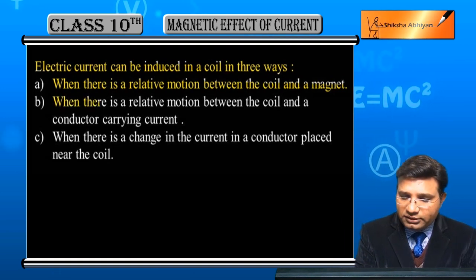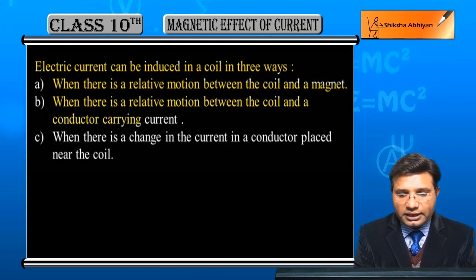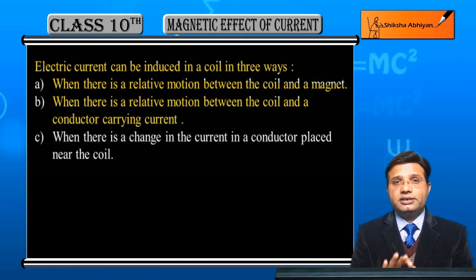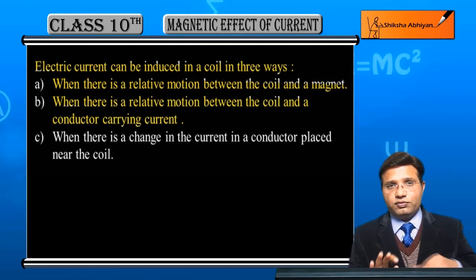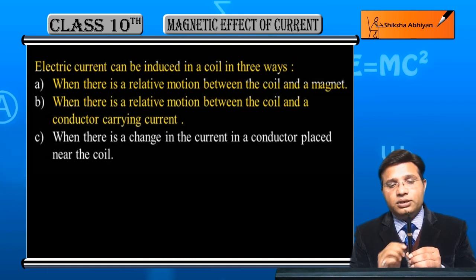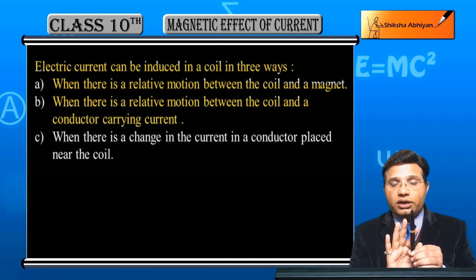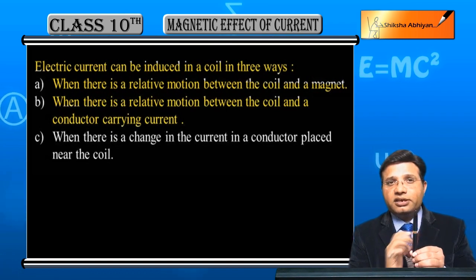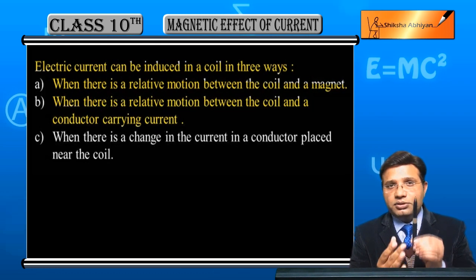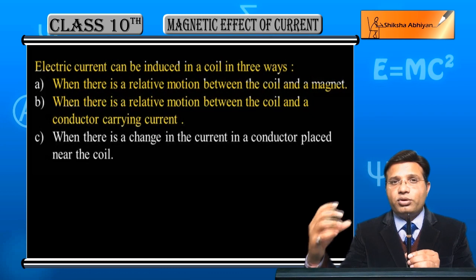Second is when there is a relative motion between the coil and a conductor carrying current. Magnet की जगह पे एक conductor लेंगे जिससे हम current पास कर रहे हैं। Current पास करने से उसके around magnetic field generate होगी — यह magnet का काम करेगा। इसको और coil के बीच में relative motion लाएंगे तो coil से related magnetic flux change होगा और induced current आ जाएगी।